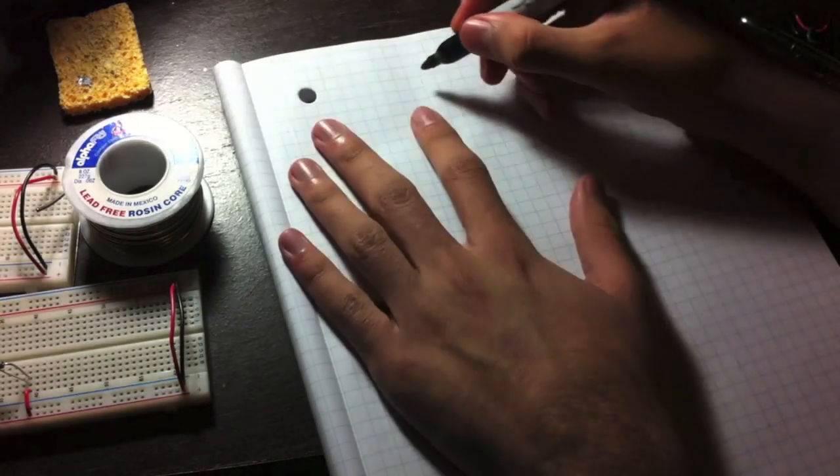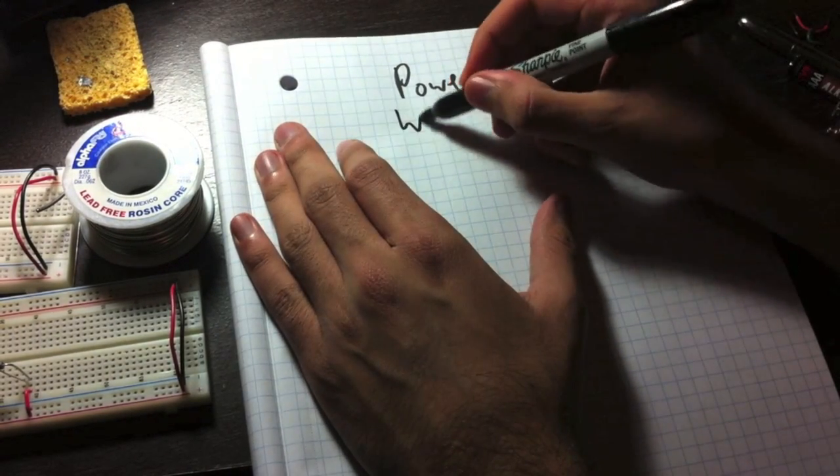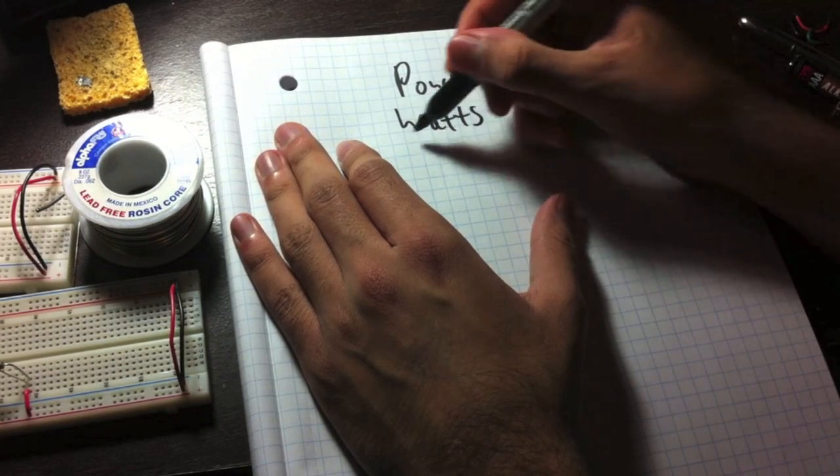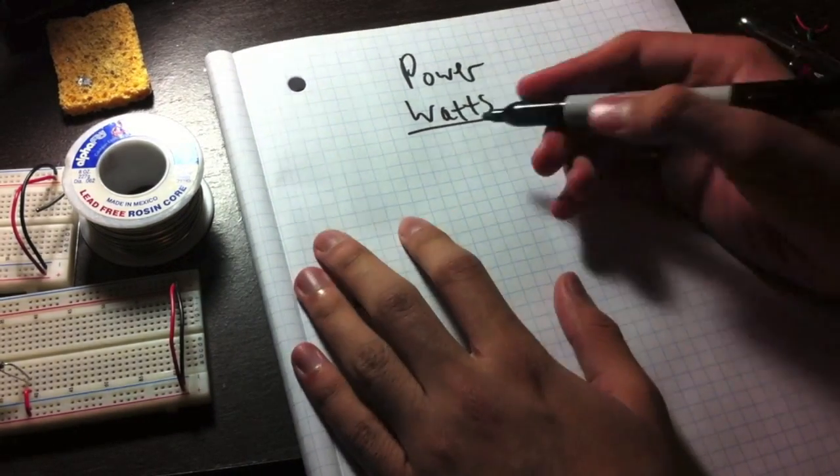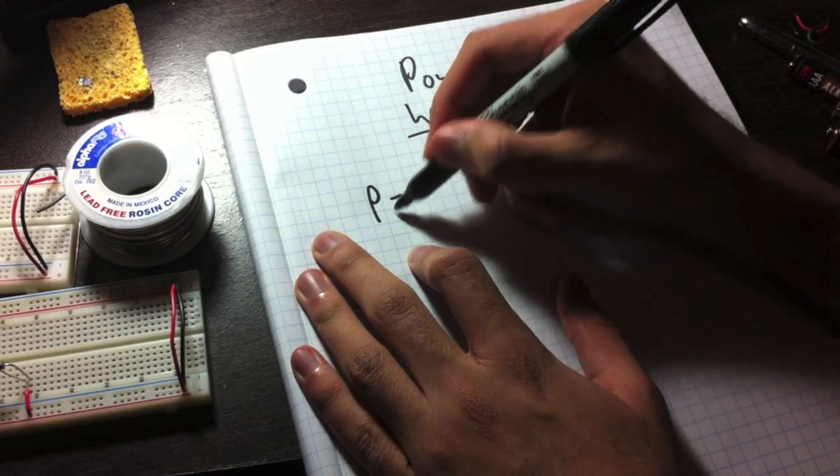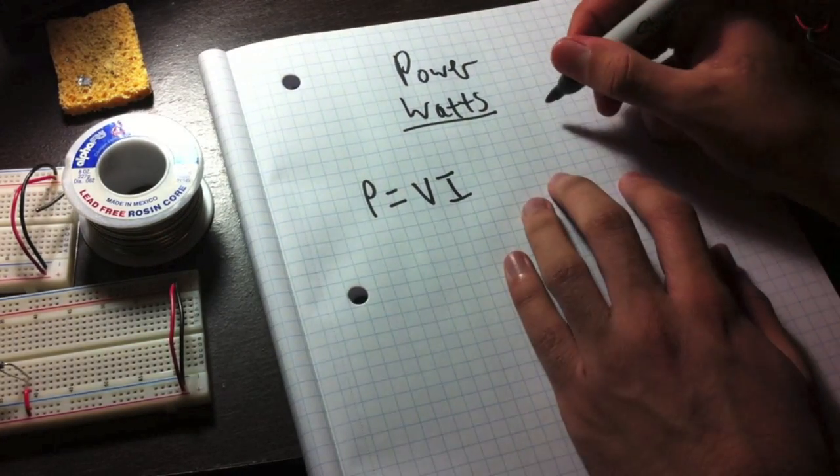And the last thing I want to show you all is power. Electrical power, also known as watts. Well what is a watt? Basically it's really simple. Power equals voltage times current. I is a symbol for it. I'll just write it on the side if you want.